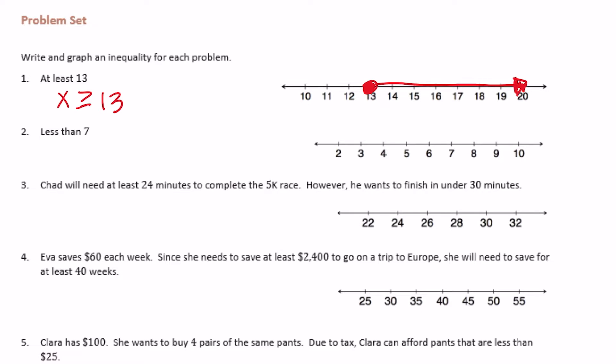Less than 7. So x must be less than 7. So I'm going to find 7 and it can't be - it doesn't say equal to or less than or equal to 7, just says less than 7. So I'm going to keep the circle open and x is less than 7.